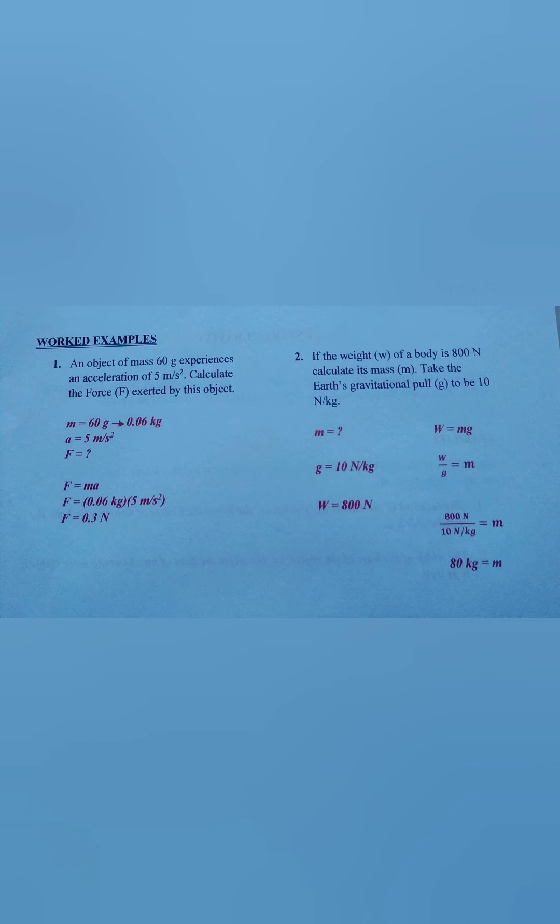We move on to the next step, which is writing the formula. Weight is equal to mass times gravity. We are being asked to find a mass. In which case, the mass must become the subject of the formula. And will ultimately become weight over gravity is equal to m.